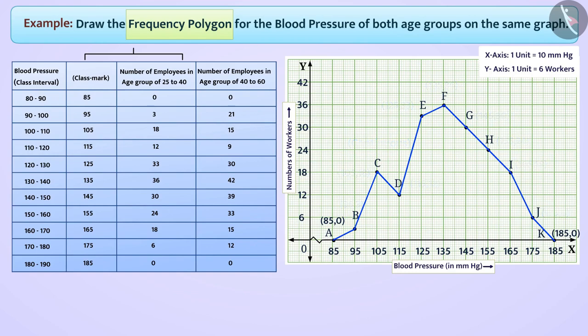This polygon represents the number of workers in age group 25 to 40 and their blood pressures. To indicate that this polygon is made up of continuous line segments representing the age group 25 to 40, we will write a corresponding symbol. Now we will draw the frequency polygon to represent the number of workers in the age group of 40 to 60 years.